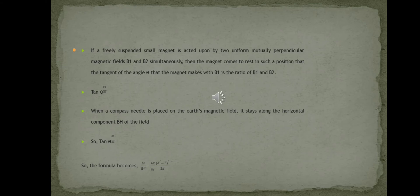If a freely suspended small magnet is acted upon by two uniform mutually perpendicular magnetic fields B1 and B2 simultaneously, then the magnet comes to rest in such a position that the tangent of angle theta that the magnet makes with B1 is the ratio of B2 and B1. When a compass needle is placed in the Earth's magnetic field, it stays along the horizontal component BH of the field.